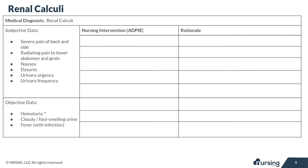The objective data includes hematuria — so if you notice there are any red blood cells in the urine — as well as cloudy, foul-smelling urine, and fever if the patient has an infection.